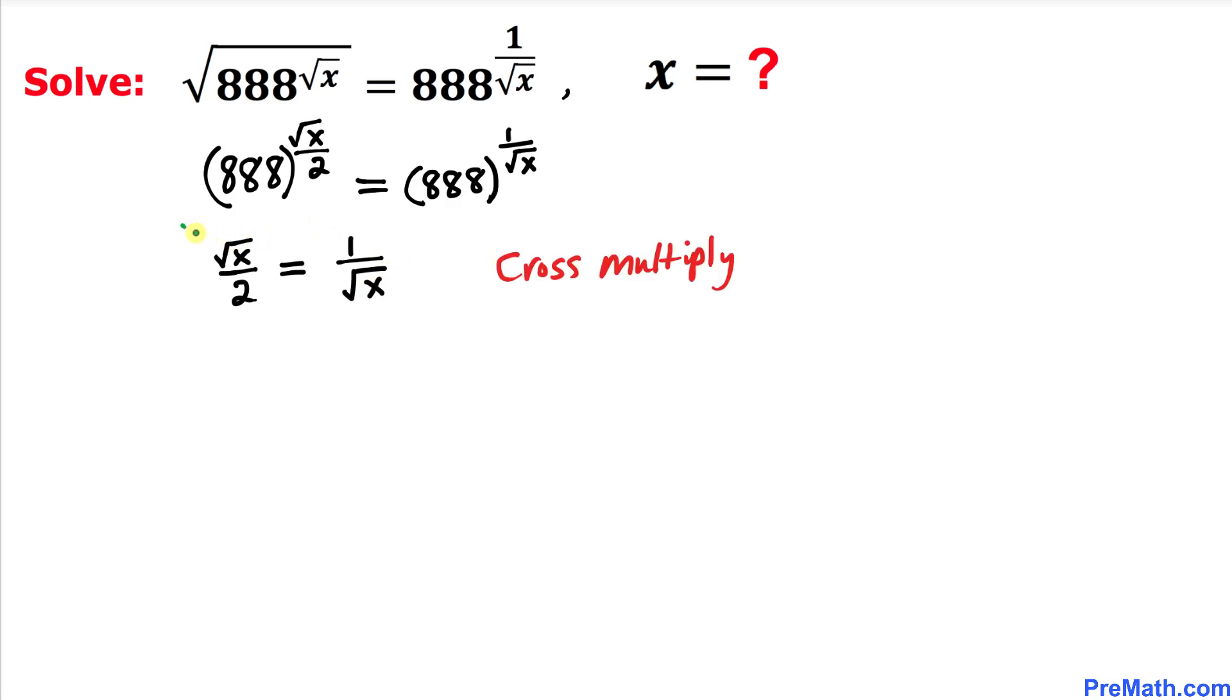Now let's do the cross multiplication. This can be written as square root of x times square root of x equals 2.